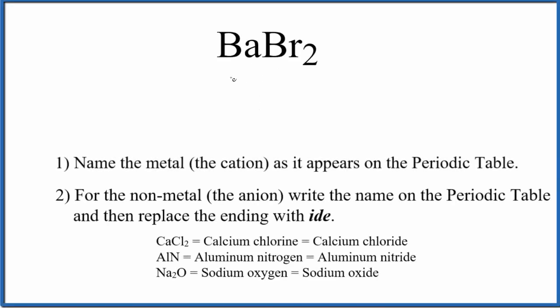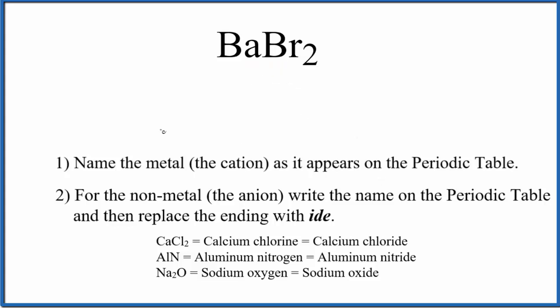Let's write the chemical name for BaBr₂. Barium is a metal, and bromine is a non-metal. So we have a metal and a non-metal here — this is going to be an ionic compound, and we'll use these rules.